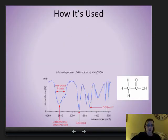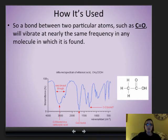So how it's used. If we have a bond between two atoms, such as the C double bonded to O, it will vibrate at nearly the same frequency in any molecule in which it's found. So the CO bond is distinctive, especially that double bond. So what we can do is look at the frequency that it vibrates to see if it's present in a sample.